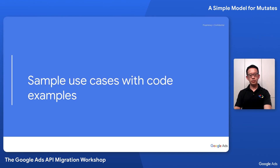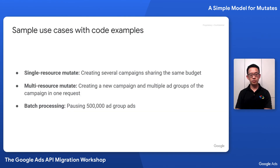The next topic is sample use cases with code examples. Because we have three mutate method types, I will show three examples. For single-resource mutate, I'll show how to create several campaigns sharing the same budget. For multi-resource mutate, I'll show creating a new campaign and multiple ad groups in one request. And for batch processing, I'll show how to pause 500,000 ad group ads.